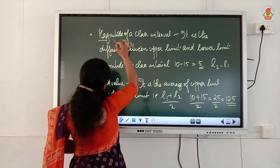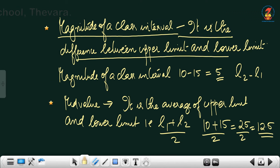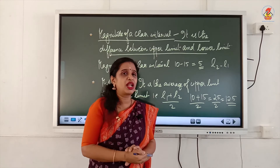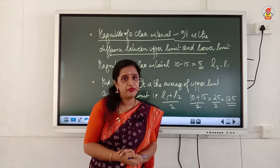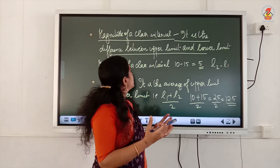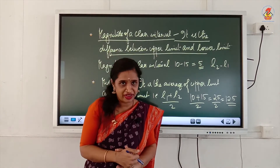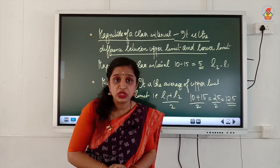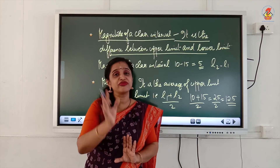The next concept is 'magnitude of a class interval.' It is the difference between the upper limit and the lower limit. Using the same example, the class interval is 10 to 15. The difference between 15 and 10 is 5, so the magnitude of the class is 5.